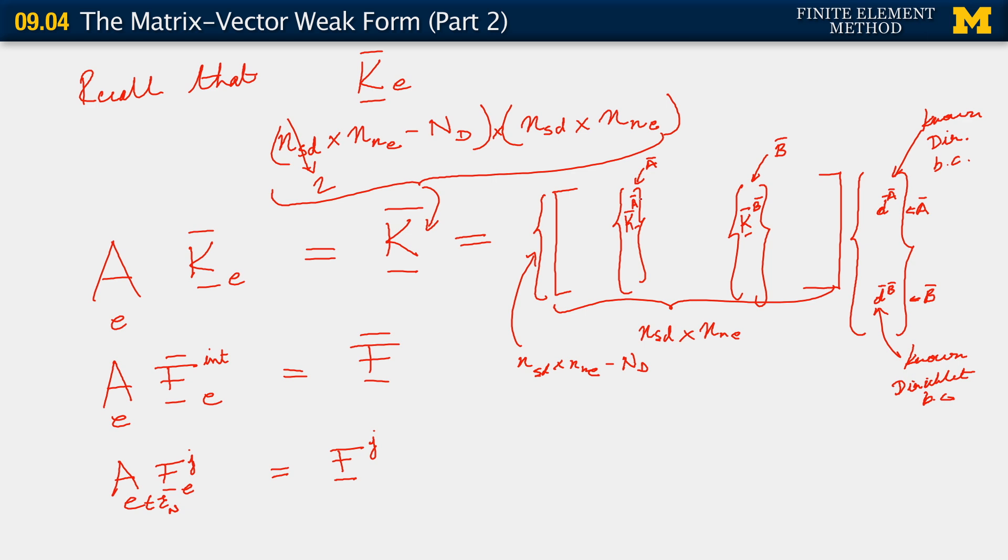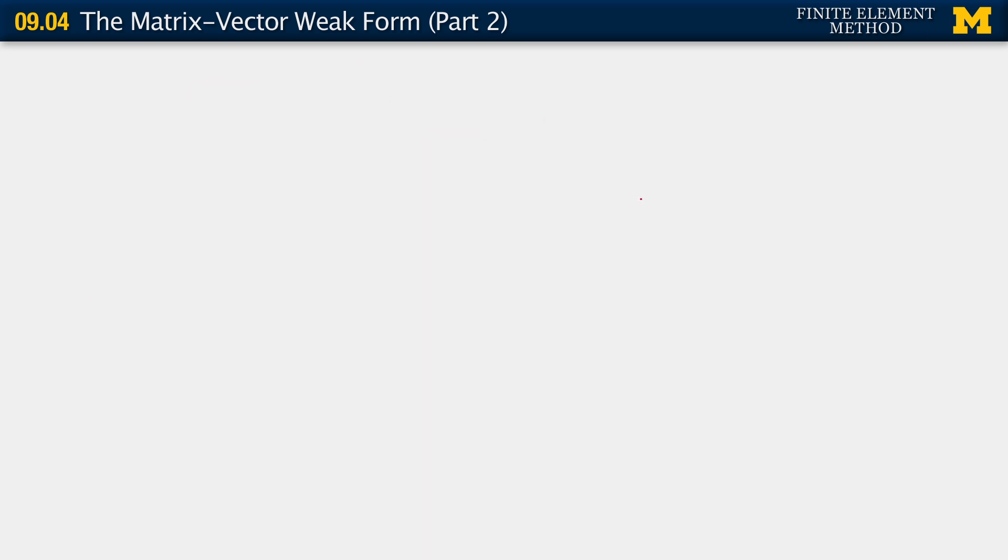And just as before, we move this all to the right-hand side. So what this gives us then is the full C vector here, now multiplying K and D where K properly now has dimensions of number of spatial dimensions times number of nodes in the element minus ND square. And therefore, C transpose and D are also of the same dimension, NSE times NNE minus ND.